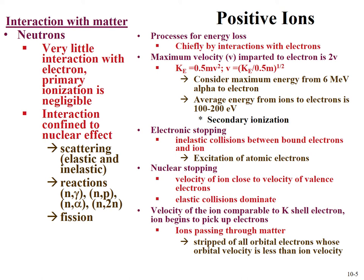Nuclear stopping occurs when the ion's velocity is close to the velocity of the valence or K-shell electrons. As the ion passes through matter and slows, it starts picking up electrons — specifically those whose orbital velocity is less than the ion velocity. Eventually the ion is stripped of all electrons with velocity less than the ion velocity, and once it starts slowing down it can rapidly pick up electrons.